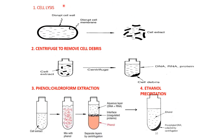In summary, first we take a culture of bacterial cells, then disrupt the cell membrane using enzymes like SDS, lysozyme, or EDTA. We can also extract cells by mechanical means. Then we centrifuge to remove cell debris — the cell debris settles down and the supernatant contains DNA, RNA, and protein.